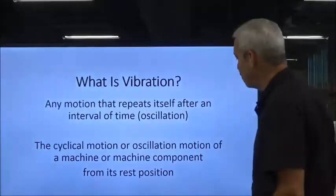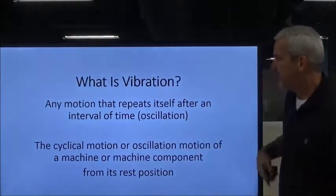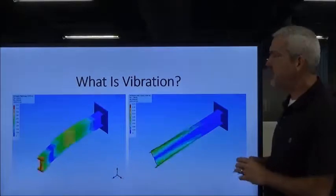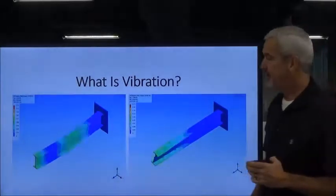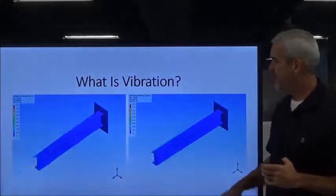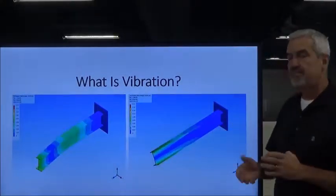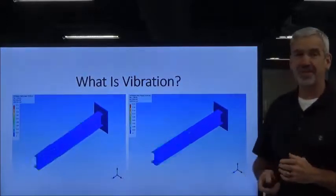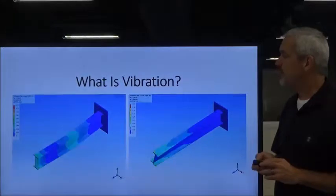I'll give you a simple reference — I've got a couple of graphics here. Here are some I-beams that are oscillating or vibrating. Here they are: this one longitudinally, and this one has a twisting torsion motion. But they are cyclical in their motion, rocking back and forth, and that is the very basis of vibration.